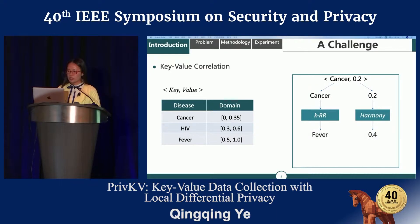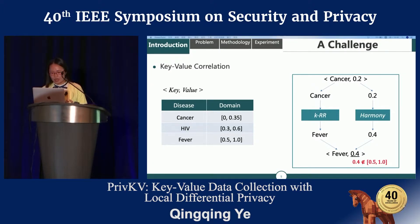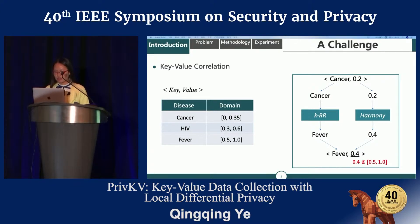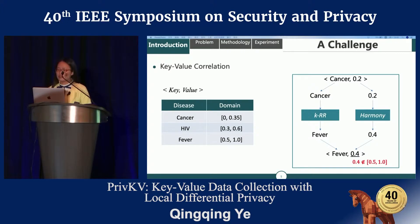There is a naive solution for key-value data perturbation. For example, for this key-value pair, the key 'cancer' is a disease and the value 0.2 is a diagnostic value. Suppose we use the existing method for categorical data to perturb the key, resulting in a perturbed key-value pair like 'fever, 0.4'. However, as we see in the left table, each disease has its own value domain, and 0.4 is not in the domain of 'fever'.